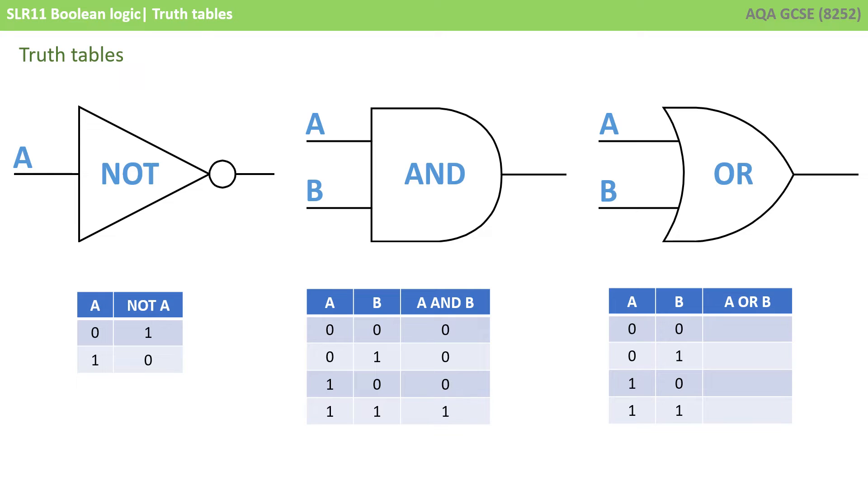In a similar fashion the OR gate has two inputs, so we've got two columns for A and B and four possible combinations. Remember with an OR gate only one of the inputs needs to be ON or 1 for the output to be 1. So in the first row they're both 0, so the output is 0. In the second one the output is 1 because at least one of the inputs is a 1. The same is true for the third row and for the fourth row.